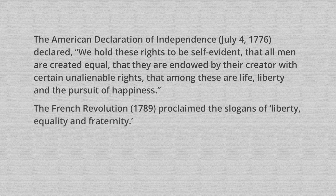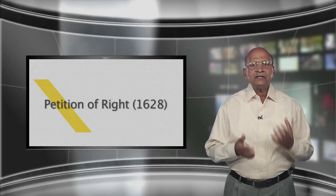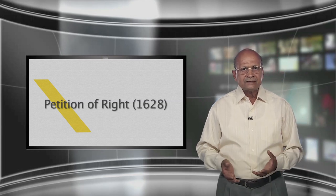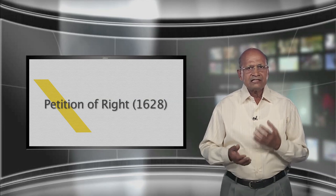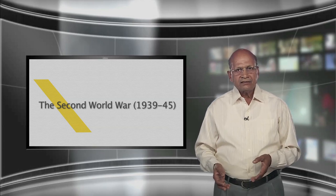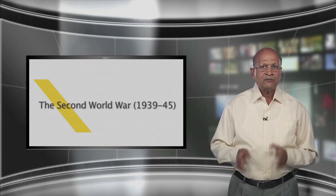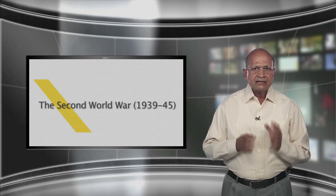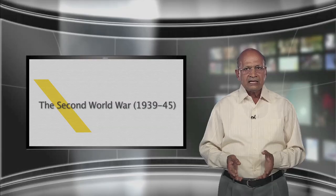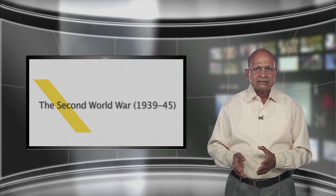The French Revolution 1789 proclaimed the slogans of liberty, equality and fraternity. The League of Nations, set up in 1920 after the First World War, was entrusted with the protection of the rights of minorities, but it failed in its basic aim of preventing war. The Second World War, 1939 to 1945, proved to be the most destructive war in history. The desire of nations to make the world free from future wars led to the establishment of the UNO in 1945. Its charter contained a number of articles relating to human rights.